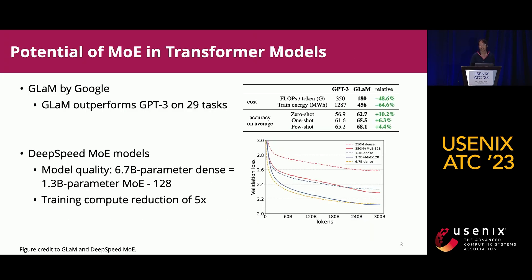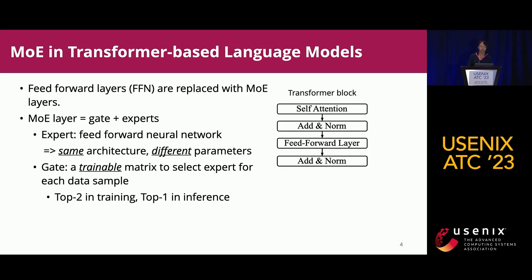MOE has shown great potential in NLP tasks using transformer models. GLaM is an MOE model family proposed by Google, and it shows that GLaM can outperform GPT-3 on 29 language tasks. DeepSpeed also introduced their own MOE models achieving the same quality as dense models but using only one-fifth of the computation cost. Therefore, in LENA we put our focus on MOE using transformer-based language models.